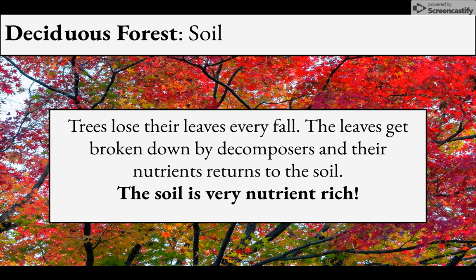The soil in the deciduous forest is very nutrient rich. Unlike the rainforest, which had lots of plants and animals decaying but the nutrients were washed away by heavy rain, in the deciduous forest the trees lose all their leaves, creating tons of leaf litter that decays and is decomposed. Those nutrients get put into the soil and stay there because there isn't too much rain washing them away.